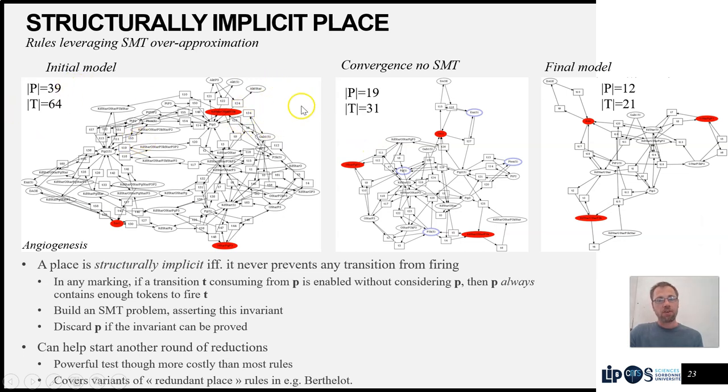Here, starting from this initial model, applying our other rules, we reach this intermediate model where no more rules can be applied. But then we can do this test with this SMT engine and actually find in this example that these four places which are non-trivially connected to the rest of the net are actually implicit. They have enough tokens that they'll always be sufficiently marked to fire, so I can just discard them.